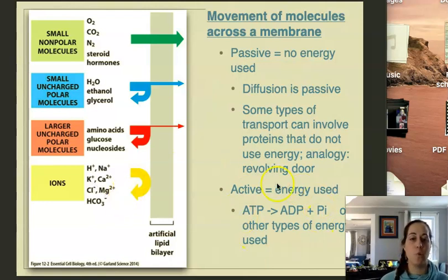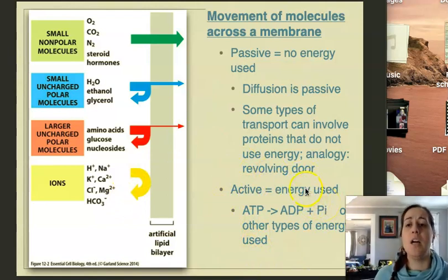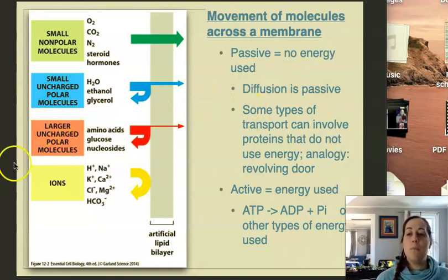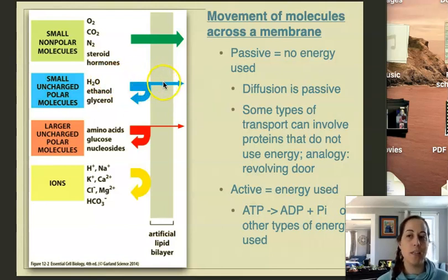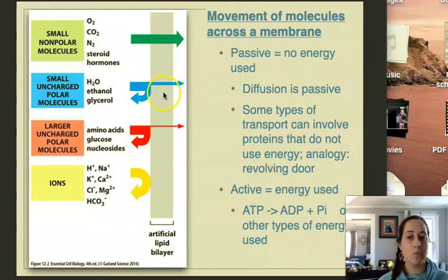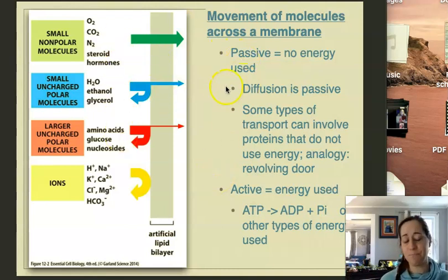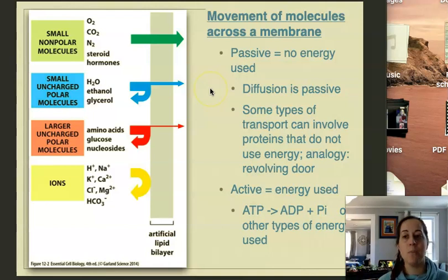Oftentimes this is going to require energy in the form of ATP, but sometimes it won't require energy. We'll talk about one example right now of moving small uncharged polar molecules across the membrane, and that is actually the movement of water. Water can move through the membrane, but not especially quickly, because water is polar and it can easily interact with the hydrophilic head groups on the outside and inside of the membrane, but it can't interact with the nonpolar tail groups within the membrane between the two leaflets.